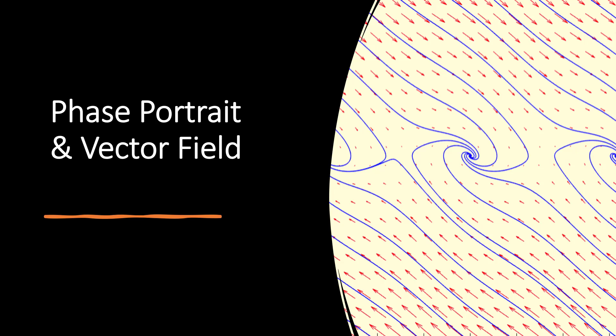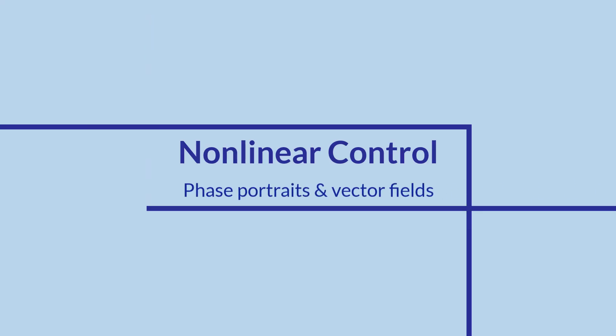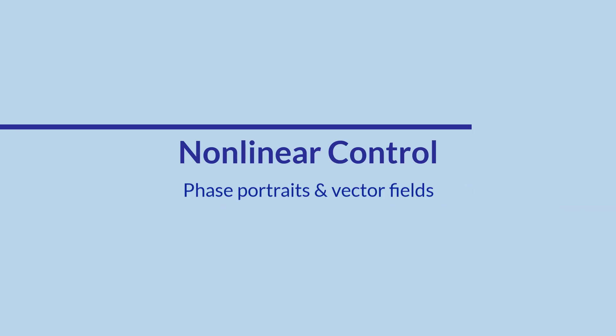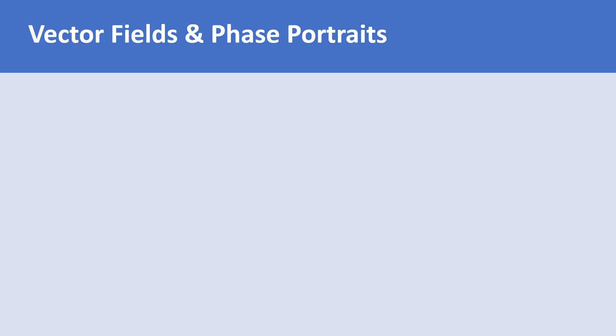This lecture is on Phase Portrait and Vector Field Diagram of Second-Order Dynamical Systems. Phase portraits and vector fields are convenient ways to visualize second-order dynamical systems, which are dynamical systems with two state variables.